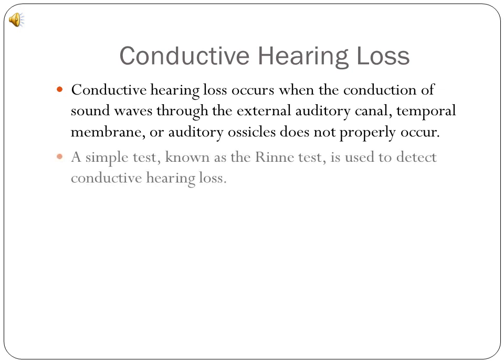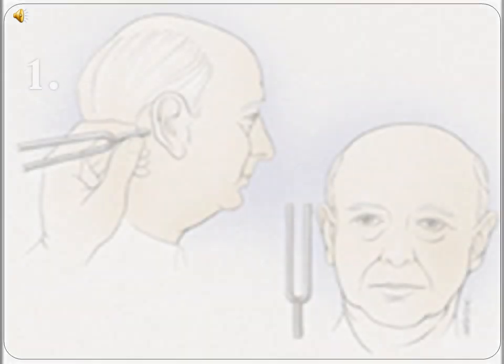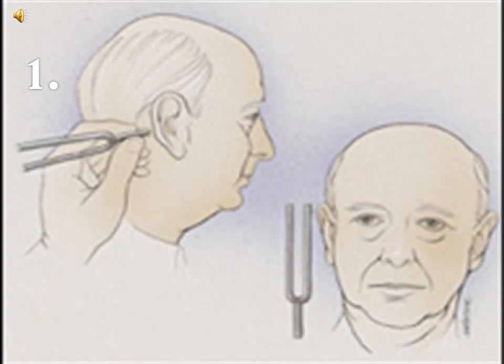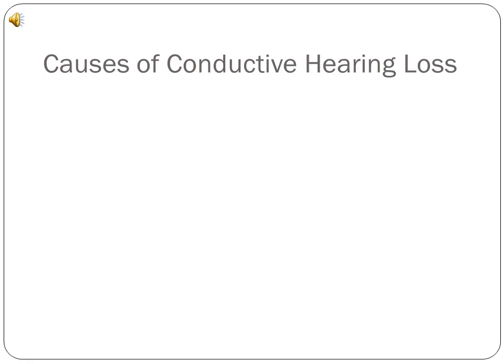A simple test called the RNA test is used to detect conductive hearing loss. In the RNA test, a tuning fork is struck and held against the mastoid process of the patient's temporal bone. When the patient reports that he can no longer hear the tuning fork, it is moved to the front of the external auditory meatus. If the patient cannot then hear the tuning fork, bone conduction is better than air conduction and a conductive hearing deficit is indicated.